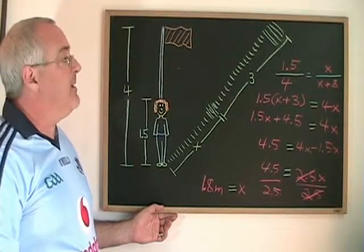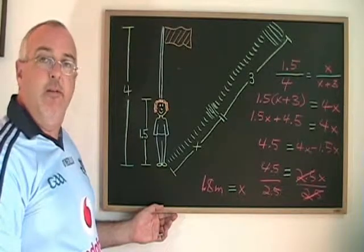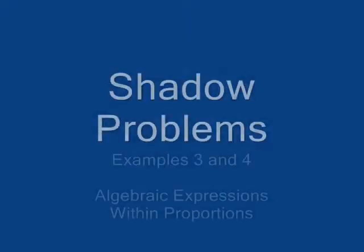These examples show several different types of two shadow problems and give you a strategy for solving them.